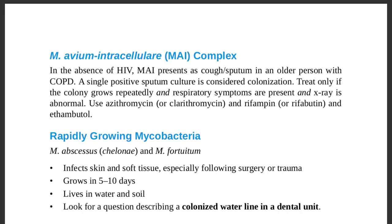Treat only if the colony grows repeatedly and respiratory symptoms are present. If respiratory symptoms are present, the x-ray is abnormal, and the colony grows repeatedly, then only you need to treat. Treatment is azithromycin or clarithromycin, plus rifampin or rifabutin, plus ethambutol — three medications.